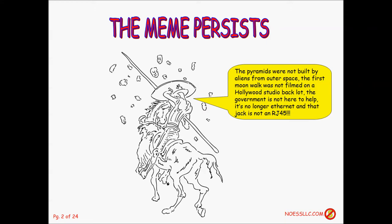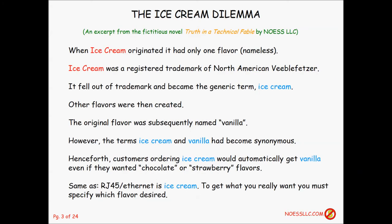There's this ice cream dilemma — it's a technical fable. Back in the dark ages somebody invented this stuff they called ice cream. It had just one flavor which had no name, because that's what it was. It was a registered trademark of North American Wiebel Fetzer, but it fell out of trademark so now it's just a generic word. Other people created other flavors but nobody had a name for the original one, so they finally stuck the word 'vanilla' on it. So now everybody thought ice cream meant vanilla — they became synonymous.